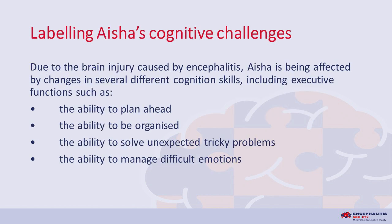Labelling Aisha's cognitive challenges. Due to the brain injury caused by encephalitis, Aisha is being affected by changes in several different cognition skills, including executive functions such as: the ability to plan ahead, the ability to be organized, the ability to solve unexpected tricky problems, and the ability to manage difficult emotions.